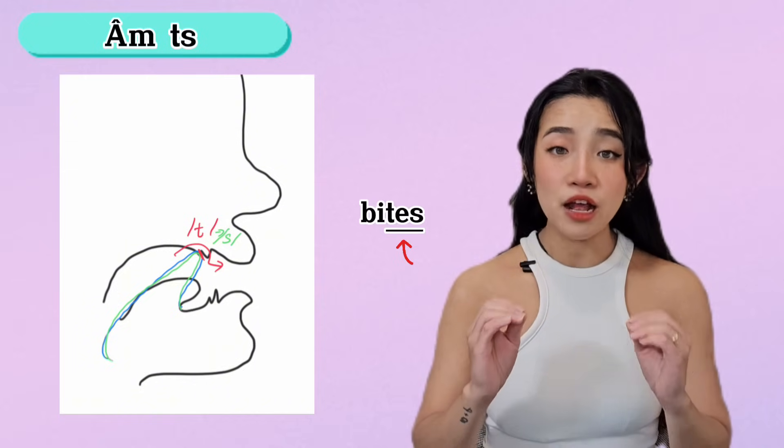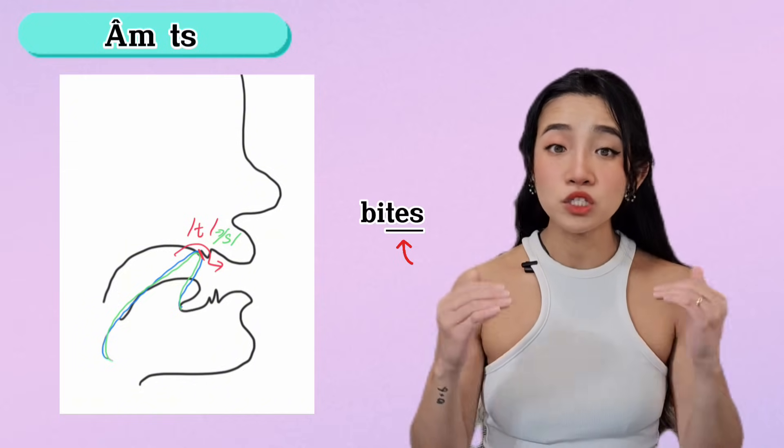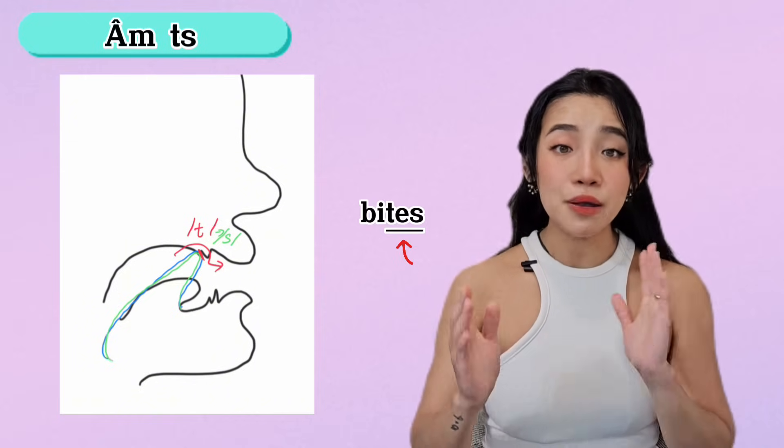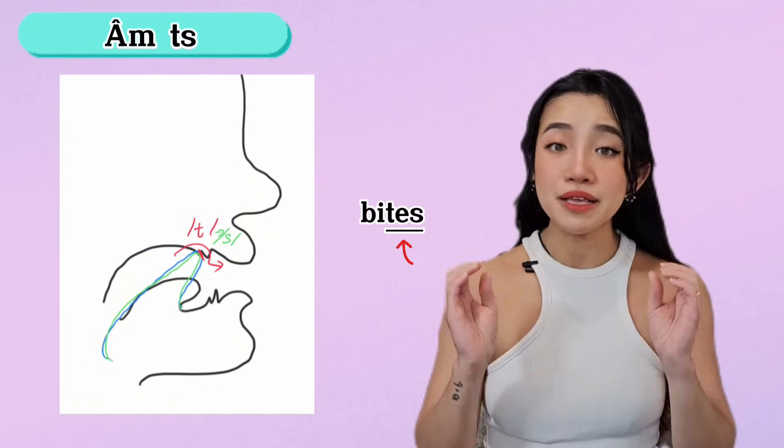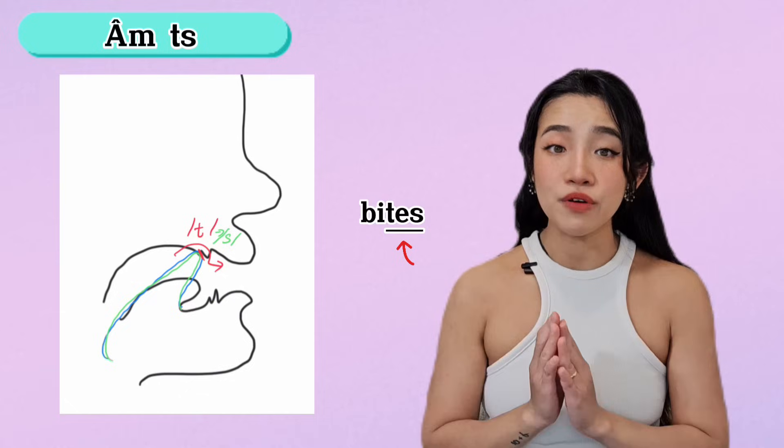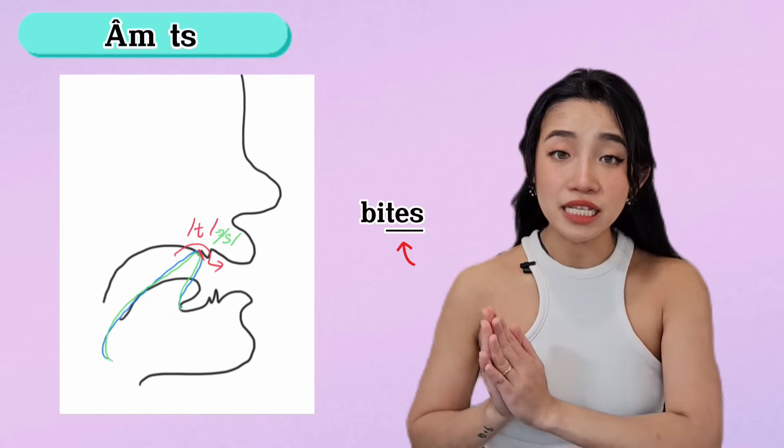Vì nếu các bạn tạo hai âm này có một lực tương tự nhau, các bạn sẽ rất dễ bị dính âm với nhau, và các bạn sẽ đọc âm sai.